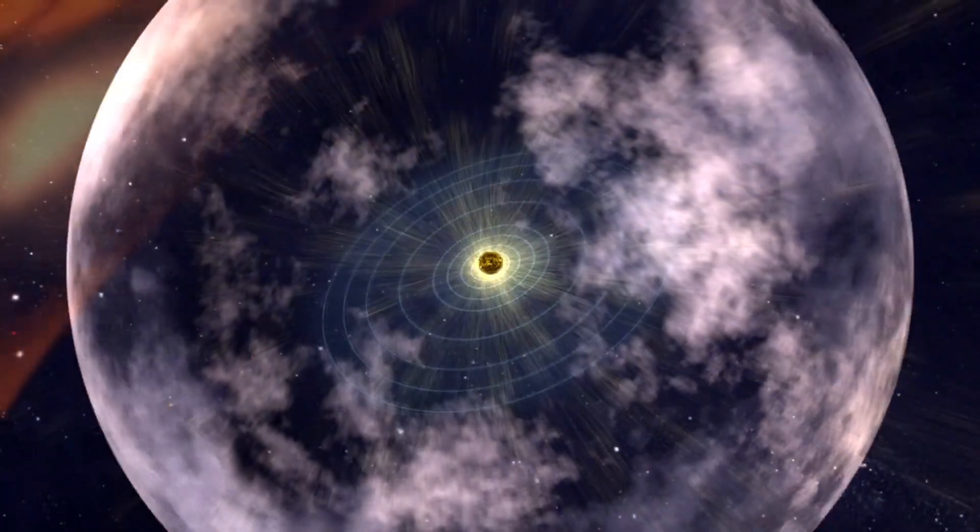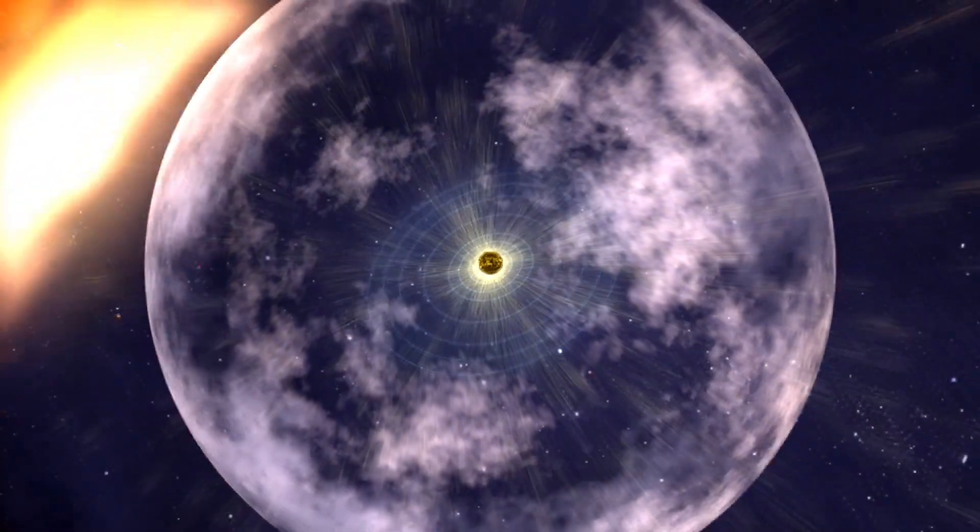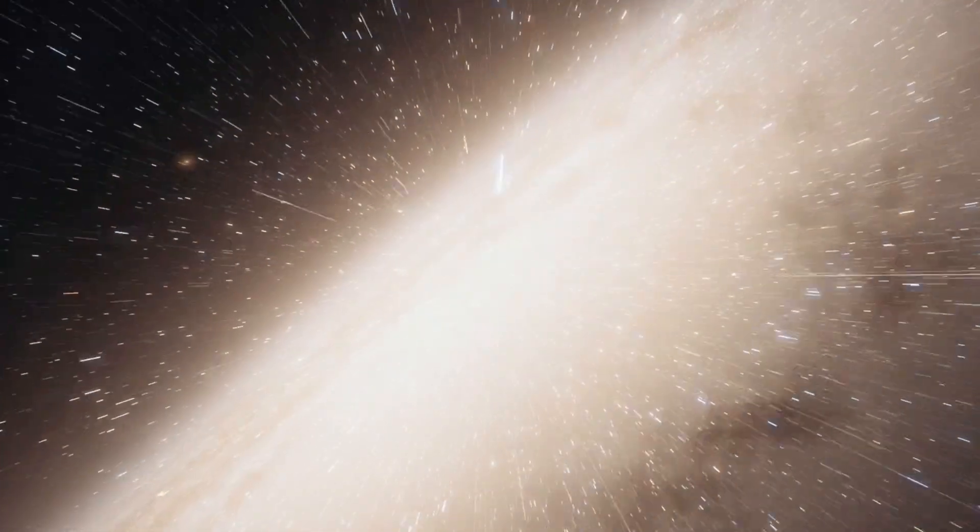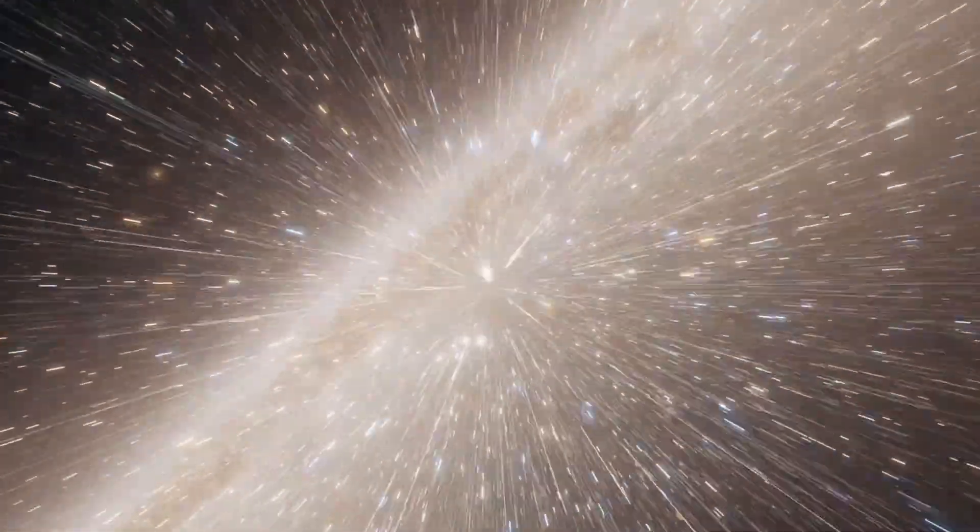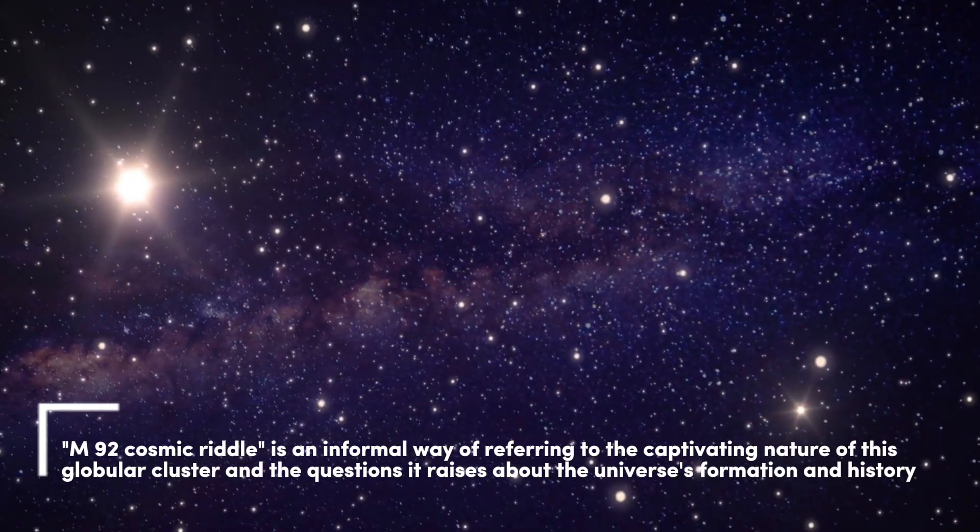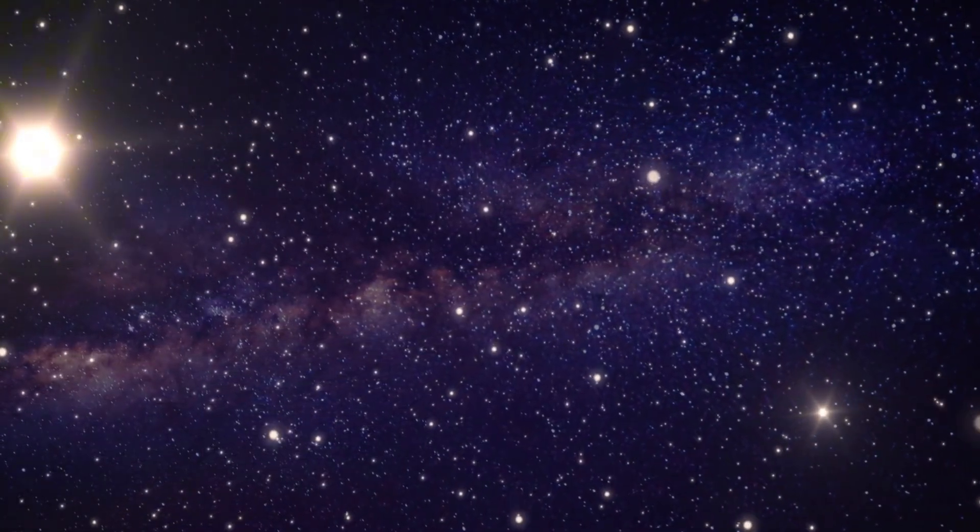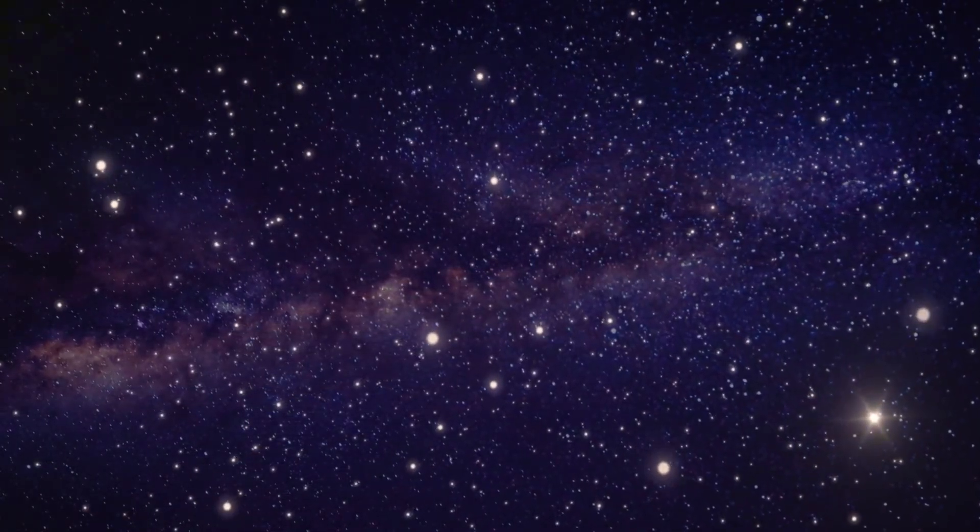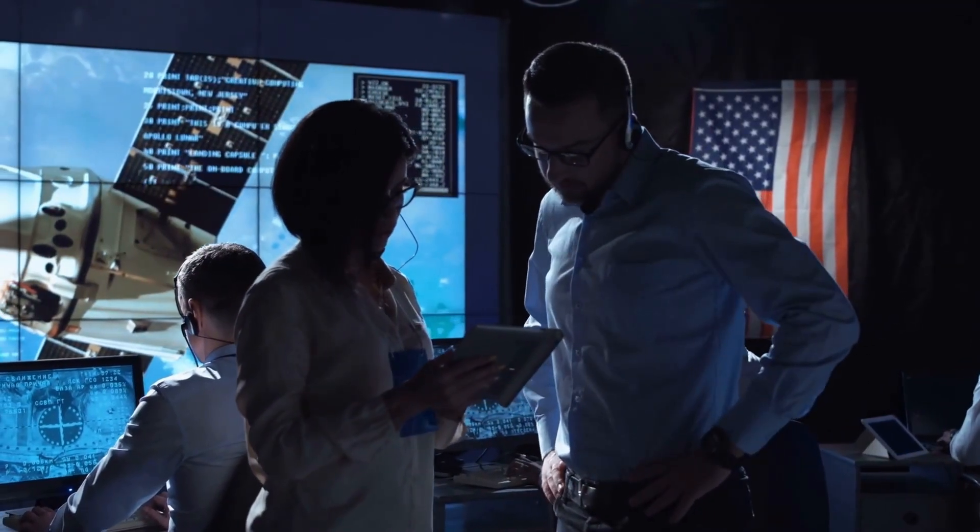But now, that number is being questioned. Inside our own Milky Way lies a cosmic riddle, M92, a densely packed cluster of ancient stars. It's believed to be nearly 13.8 billion years old, as old as the universe itself. Some estimates even suggest it could be older. How is that possible?